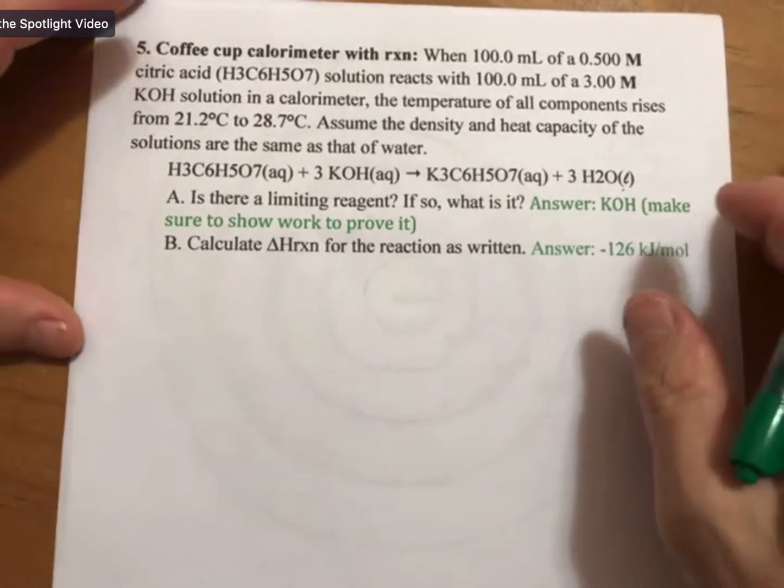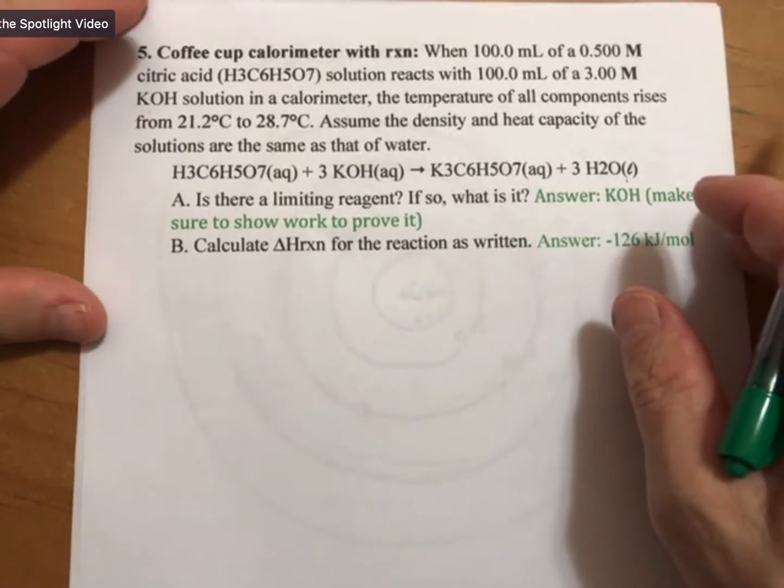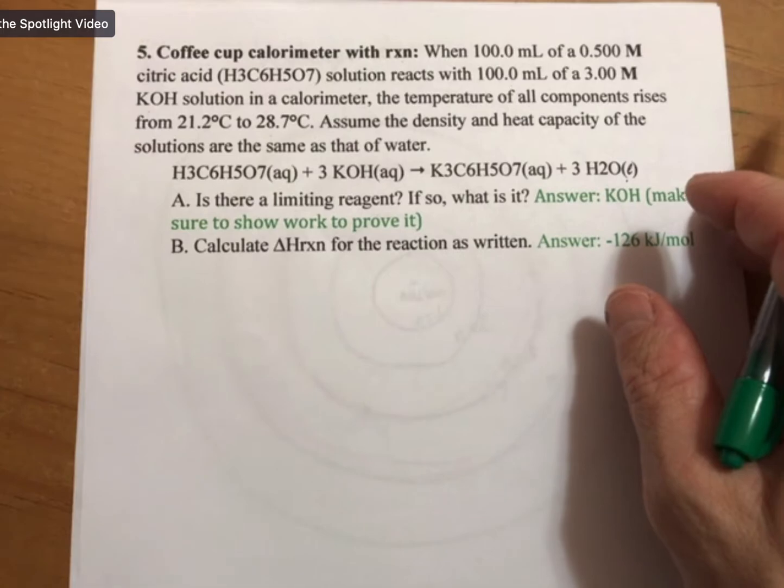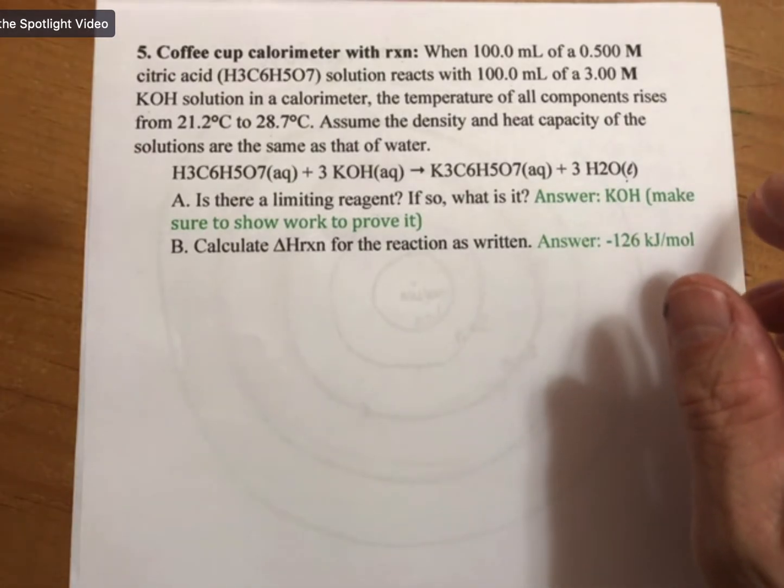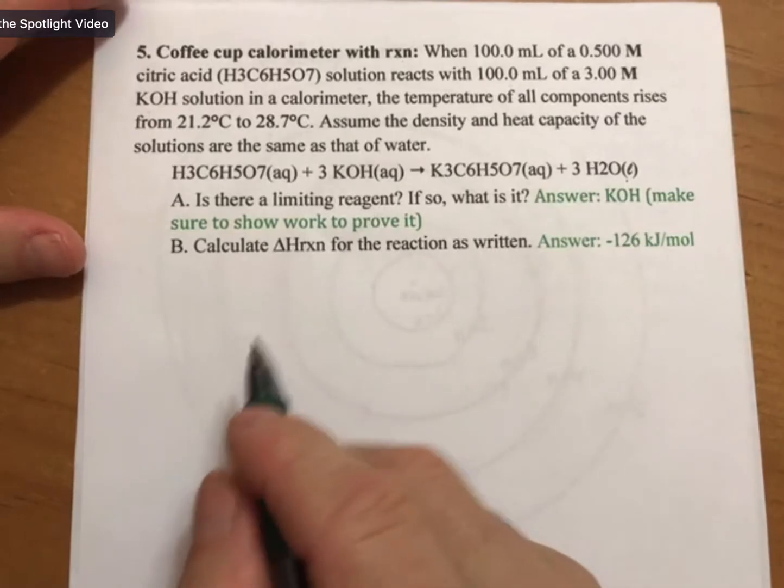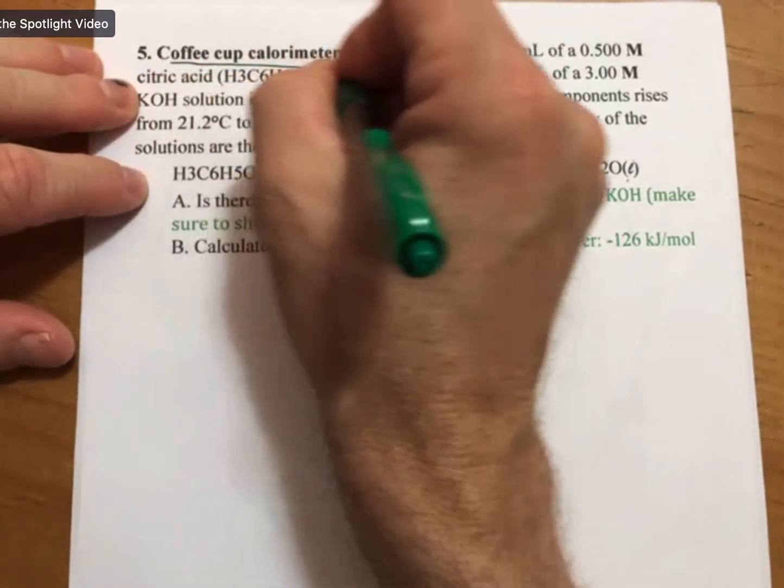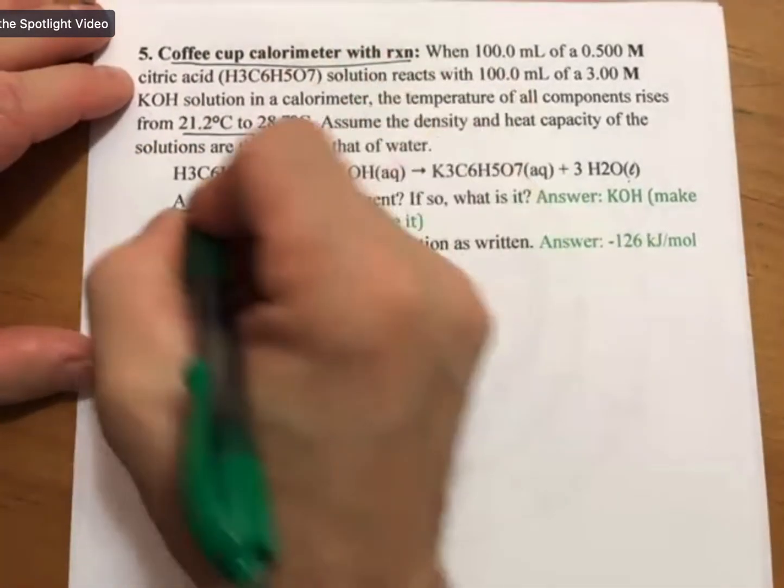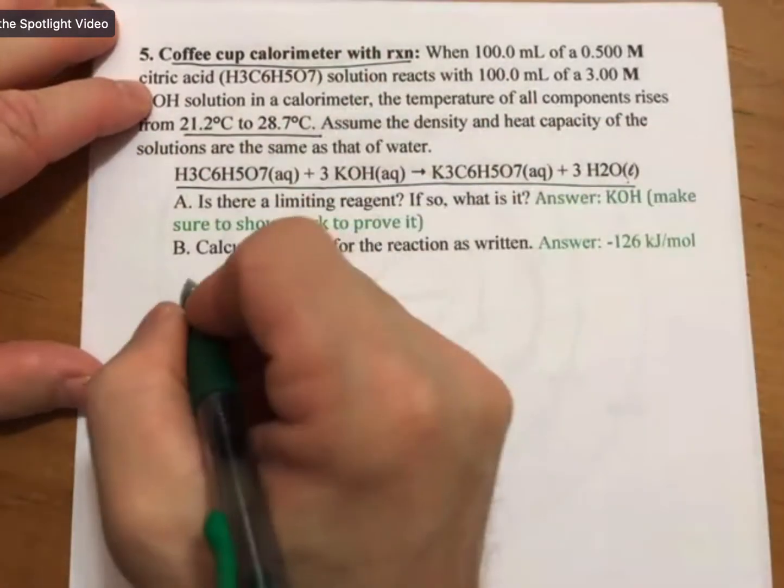And I will say this right now. This is more complicated than you're going to find on your exam in at least one way. However, it's just a little more complicated. So when you see that it's a coffee cup calorimeter with reaction problem, or you see both a temperature change and a balanced reaction...